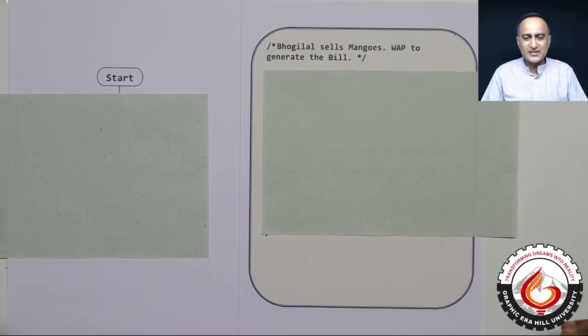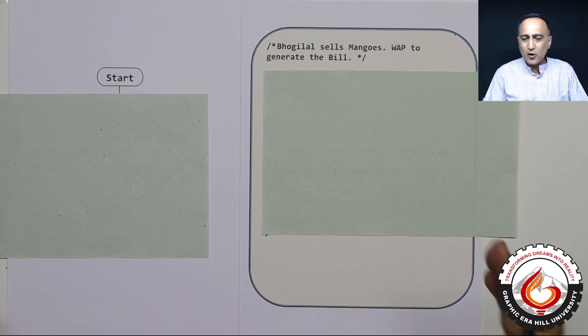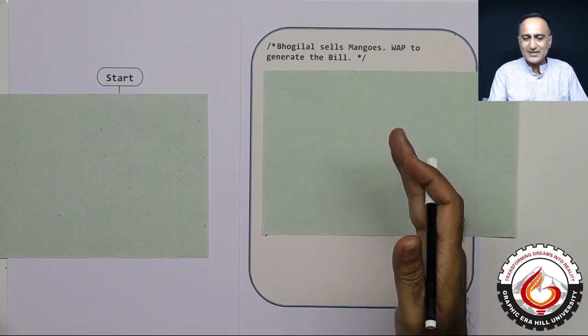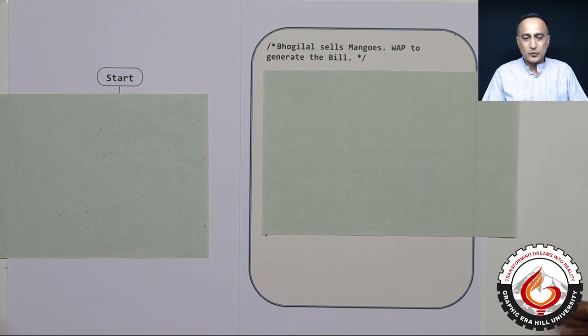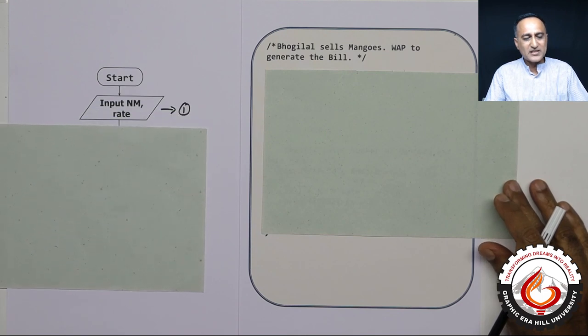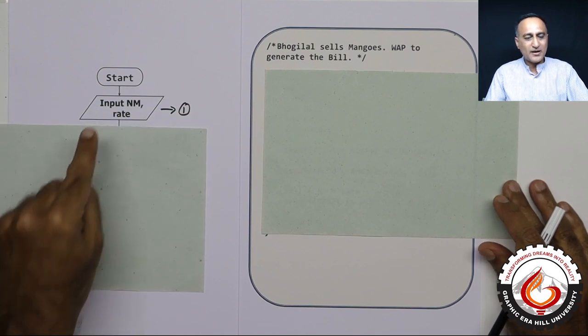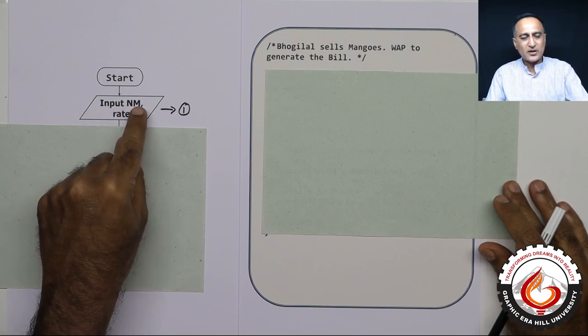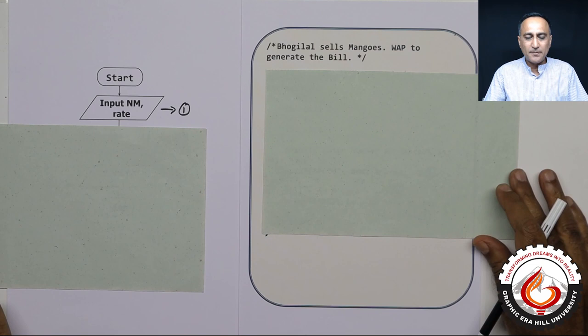Continuing on our Bogilal series of problems, this particular problem asks us to find the bill amount. All that it tells us is Mr. Bogilal sells mangoes and we are required to write a program to generate the bill. Since it only tells Bogilal sells mangoes, I need at least two information to calculate the bill: one is the number of mangoes and the next is what is the cost per mango. So in the first step, I am going to ask Mr. Bogilal, give me the number of mangoes - nm stands for number of mangoes and rate stands for the cost per mango.